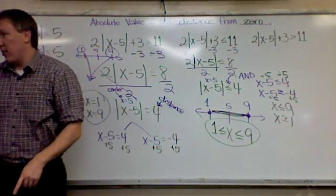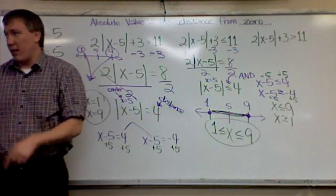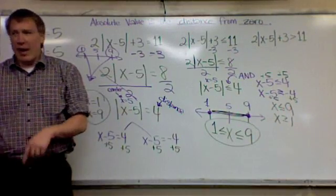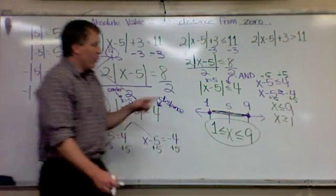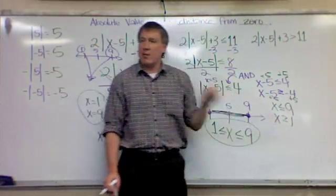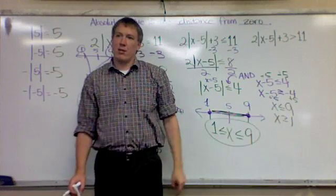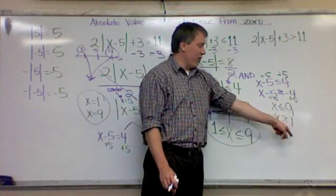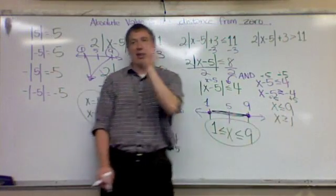But then you've got to remember, this is an and statement. Because it's less than. It's an and statement. Do you see how this is getting confusing? It's an and statement. It has to be both at the same time. So I need to write it as one thing. How do you write something that is both greater than or equal to 1 and less than or equal to 9 at the same time?